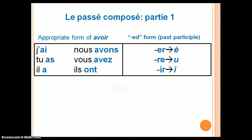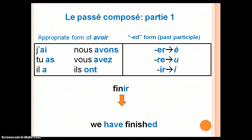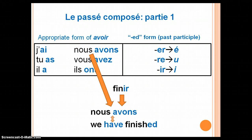As yet another example, let's use finir. Imagine you want to say, 'We have finished.' Your first step is to select the appropriate form of avoir — in this case, nous avons — and the appropriate past participle of your verb. Finir is an ir verb, and ir verbs change to i. Now you have nous avons fini — we have finished.